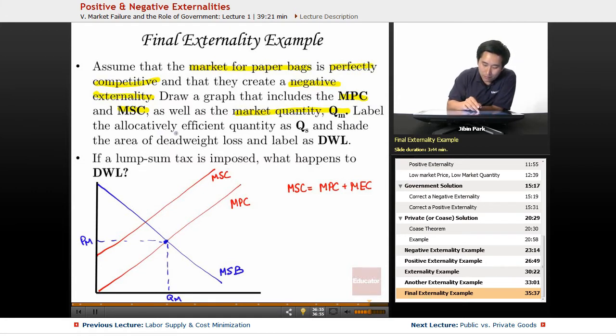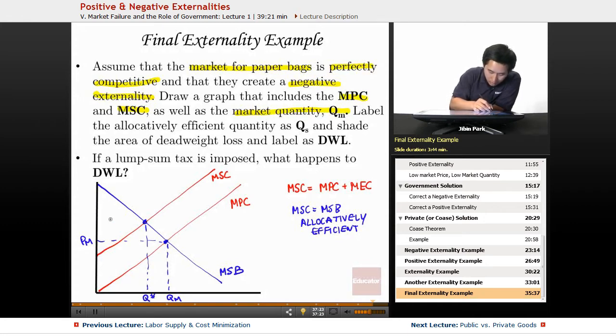Label the allocatively efficient quantity as Qs and shade the area of deadweight loss and label as DWL. Well, the allocatively efficient is where MSC equals MSB. That's allocatively efficient.